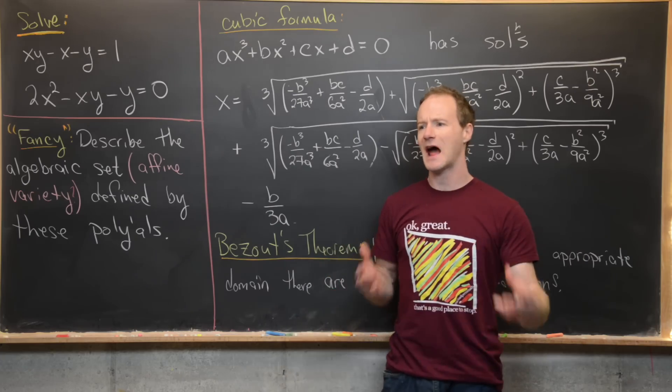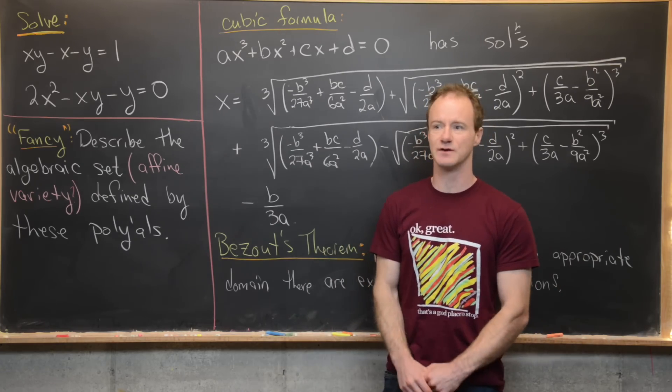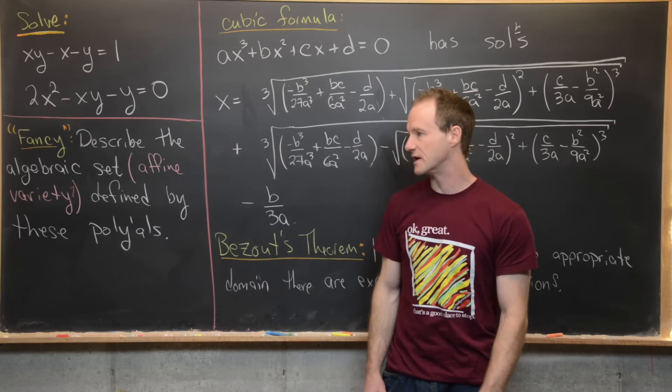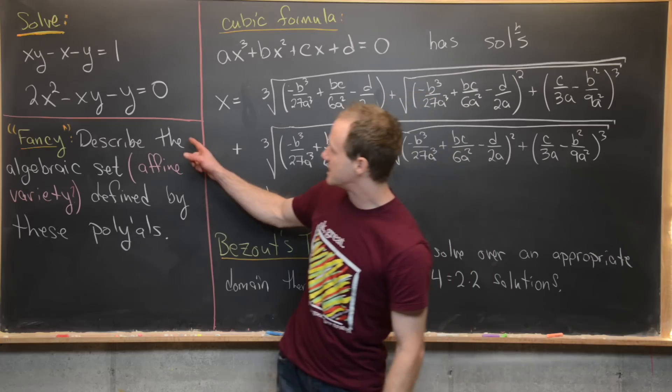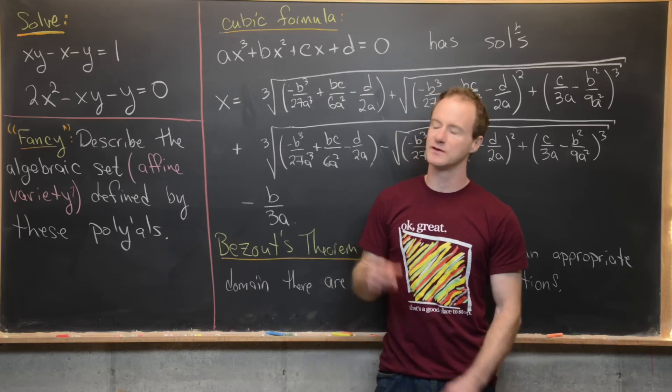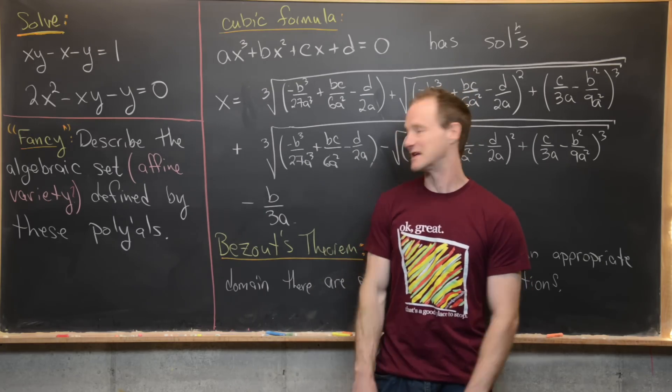But I'll point out how we could find the complex solutions or any other solutions there might be along the way. I want to say that there's a fancier way to write this. We could describe the algebraic set defined by these polynomials. So that would be an algebra geometric way of stating the same problem.